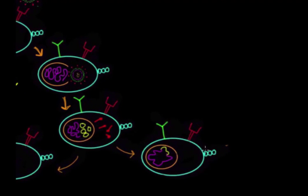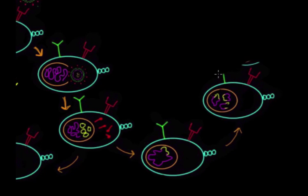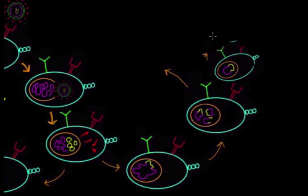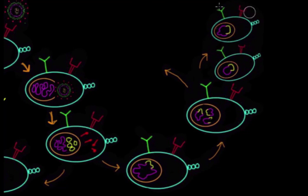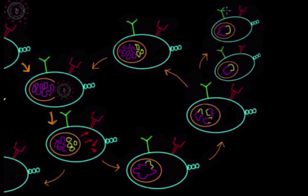But in the lysogenic cycle, the viral genome becomes incorporated into the host chromosome, and it spreads quietly throughout the organism as the infected host cell reproduces through meiosis. Here, the virus is able to remain latent or hidden.